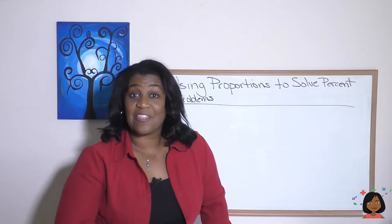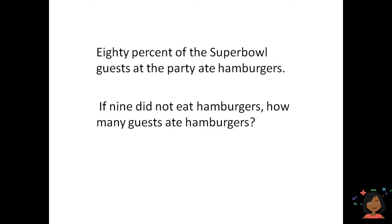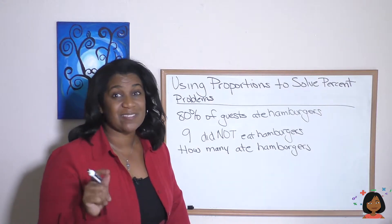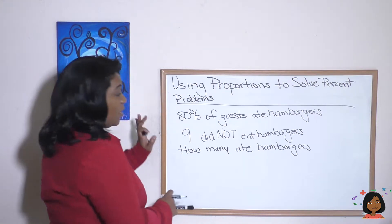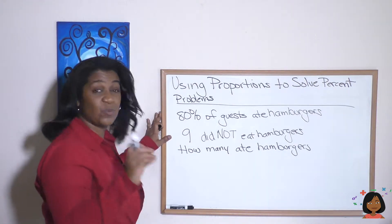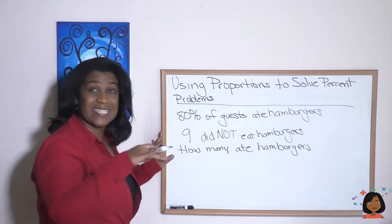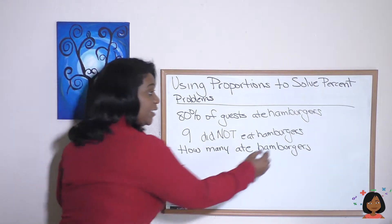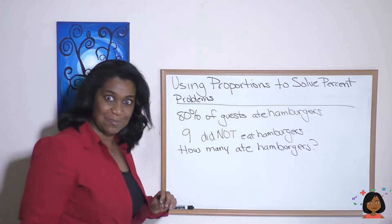Let's take a look at another example. 80% of the Super Bowl guests at the party ate hamburgers. If nine did not eat hamburgers, how many guests ate hamburgers? We can use another ratio box to figure this one out. Again, 80% of the guests ate hamburgers, nine did not eat hamburgers, and we want to find how many actually ate hamburgers — add a question mark there.